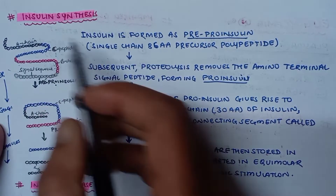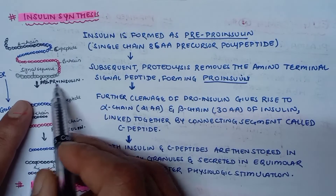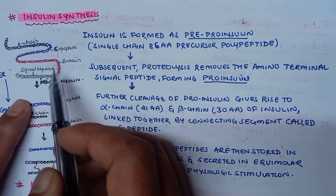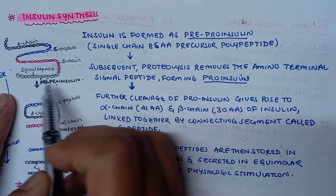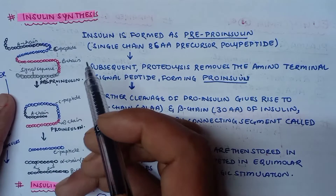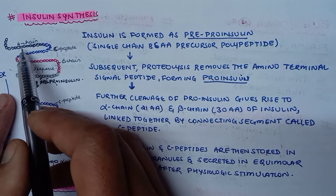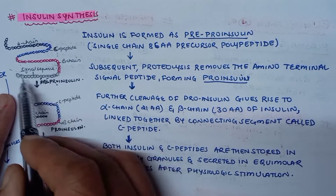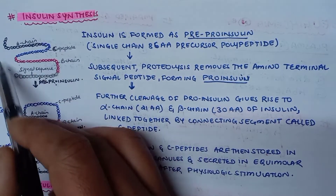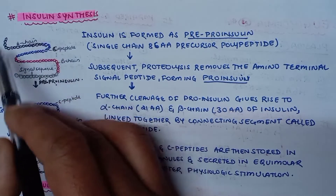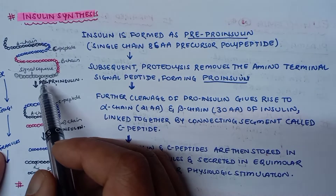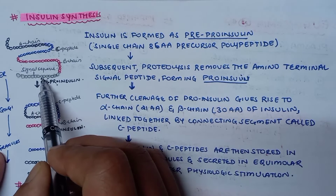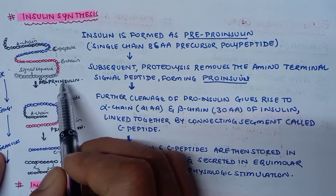Insulin is formed as pre-pro-insulin, a single chain 86 amino acid precursor polypeptide containing an alpha chain, C peptide, beta chain, and signal sequence. This occurs in the endoplasmic reticulum. Subsequently, proteolysis removes the amino terminal signal peptide.